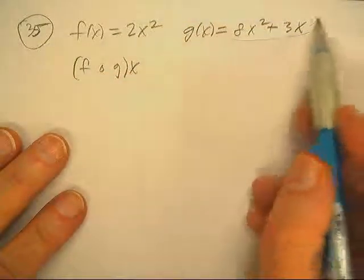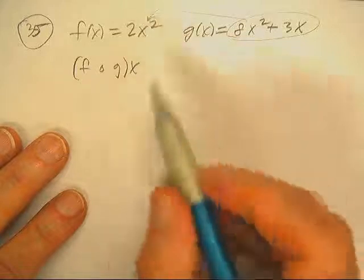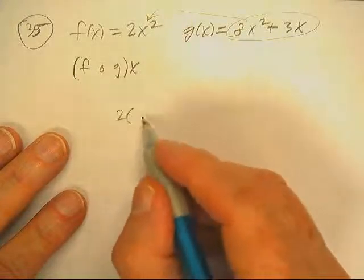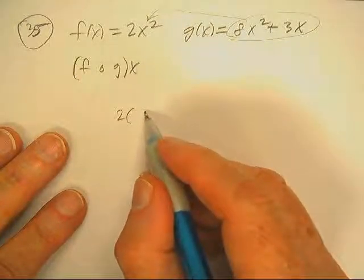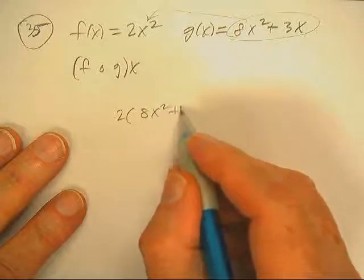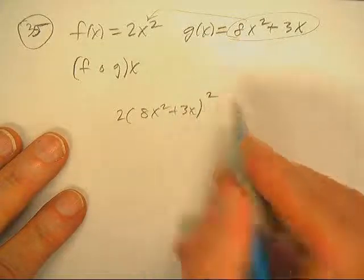Okay, welcome back. Now we're going to take this one and put it in there. So I'm going to get 8x squared plus 3x, and that whole thing is going to be squared.